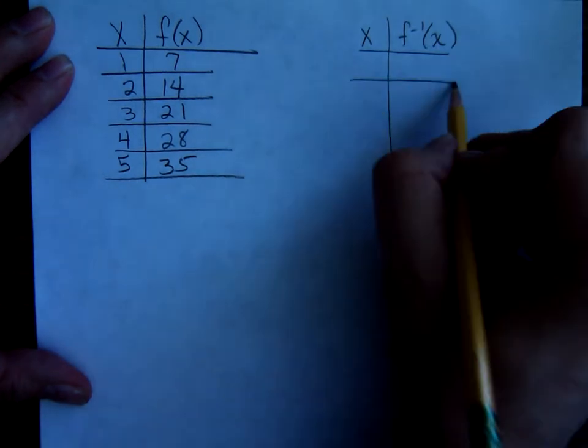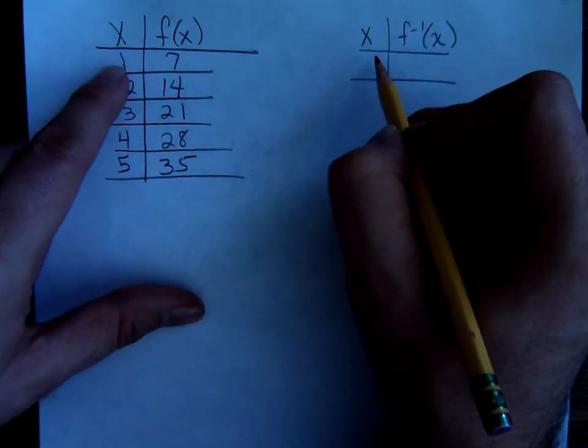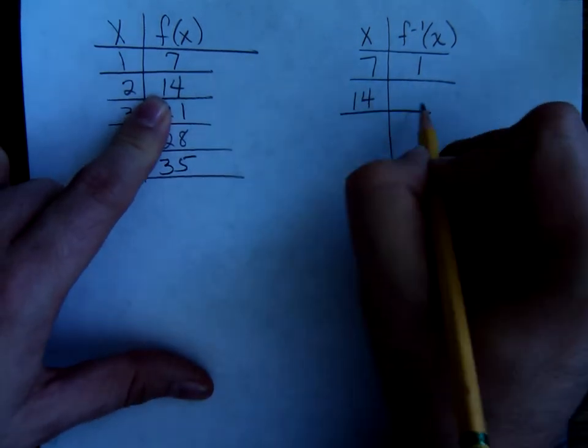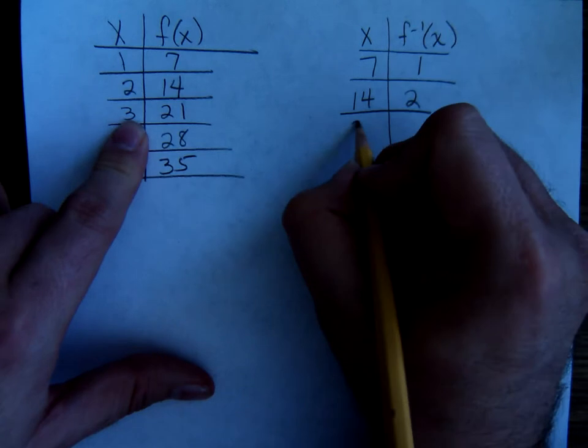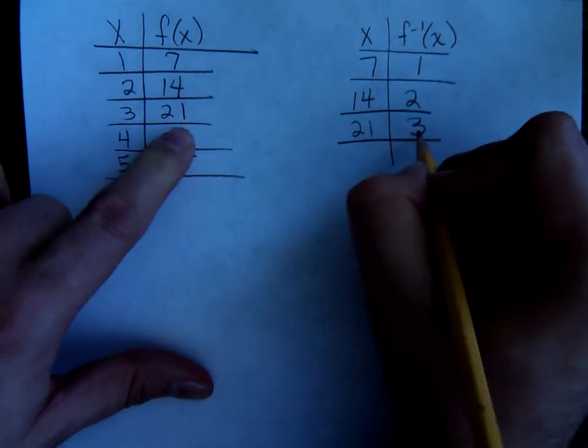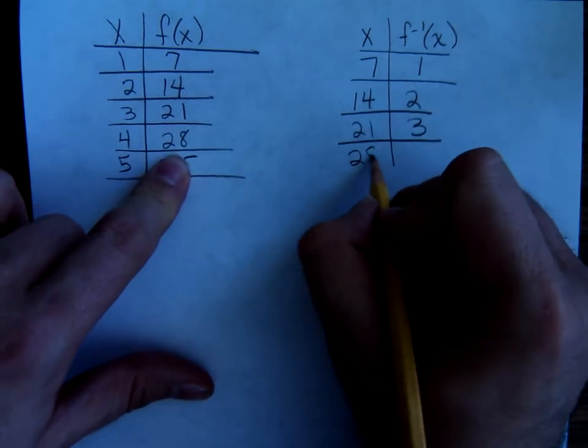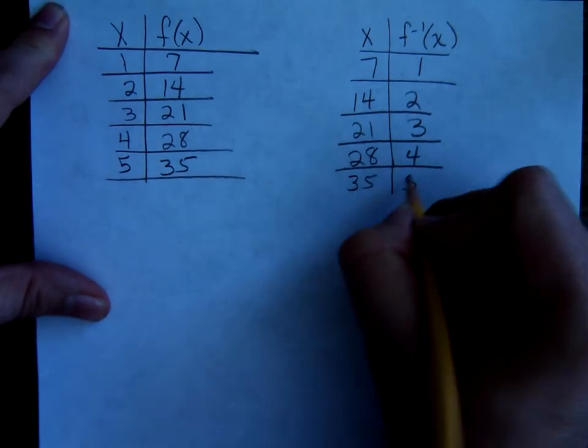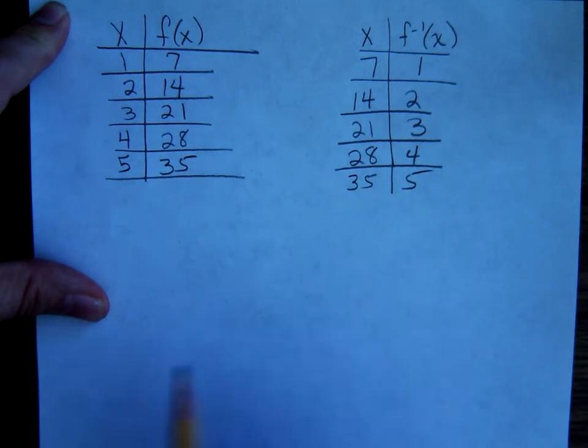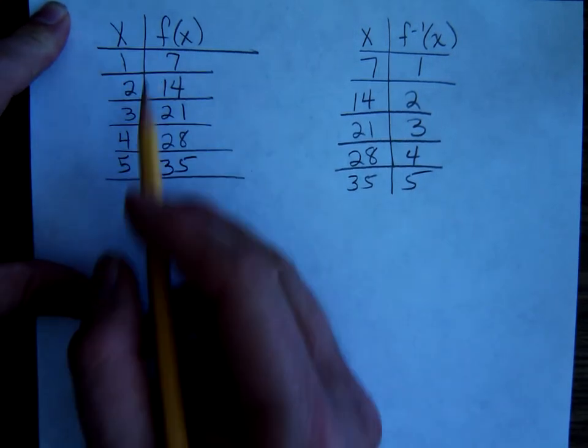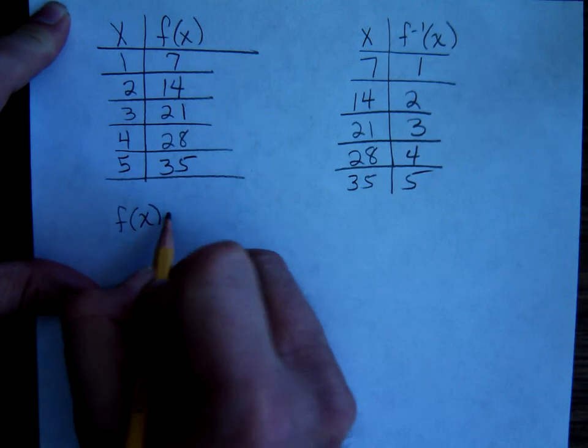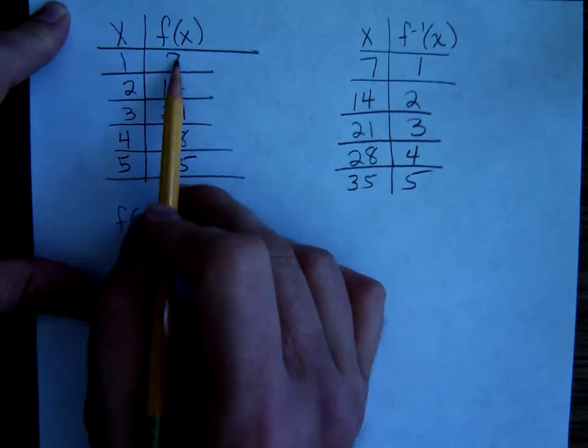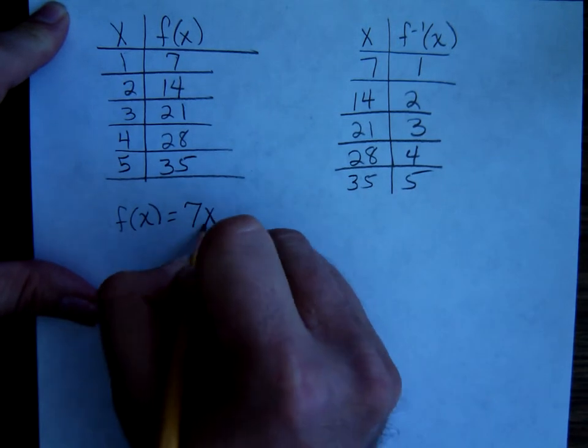So instead of one as the x and seven as the y it'd go like this: (7, 1), (14, 2), (21, 3), (28, 4), (35, 5). I think most of y'all could figure out a way to write a rule for that. f of x, it looks like we're doing what to each of these x values to get the y value? Multiplying by 7.